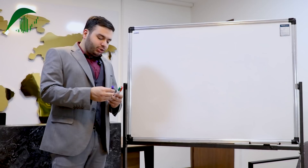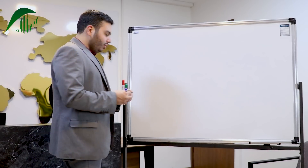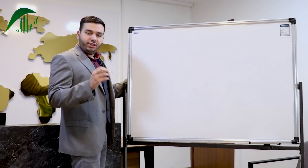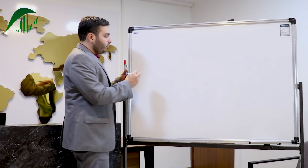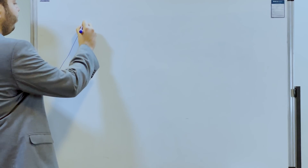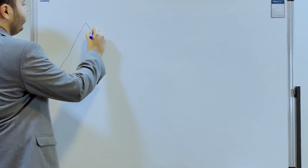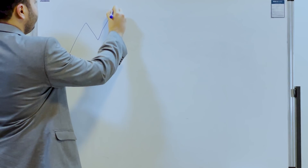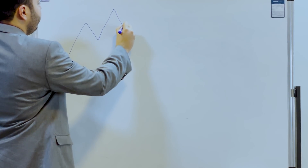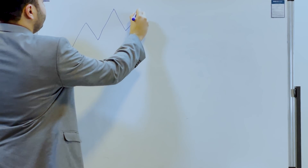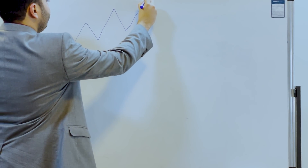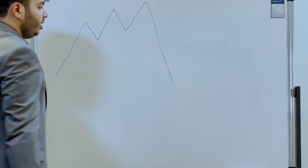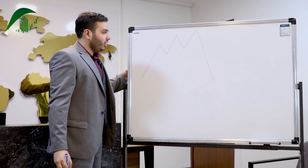We have a perfect chart pattern in cryptocurrency called three drivers. Price moves up and forms the top. After a correction, price moves up again. Another correction and price moves up again. After the third top, we have a big correction in the market.